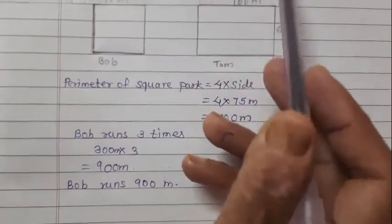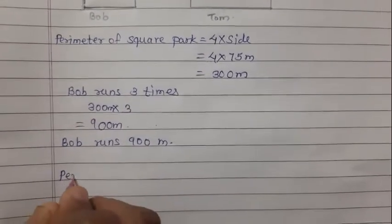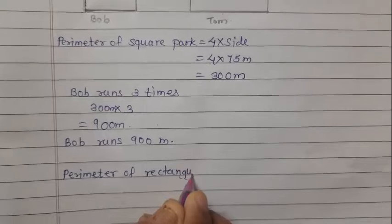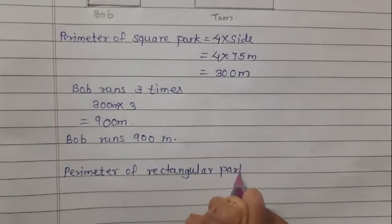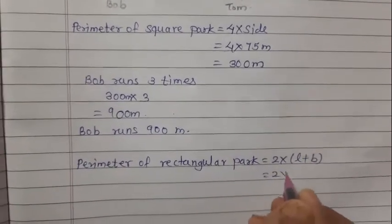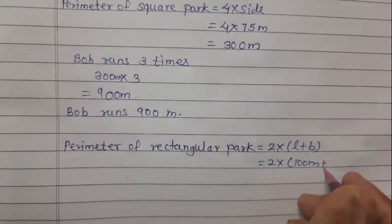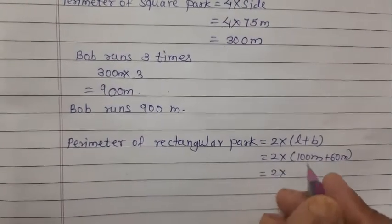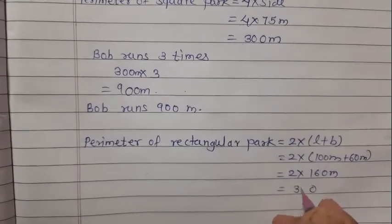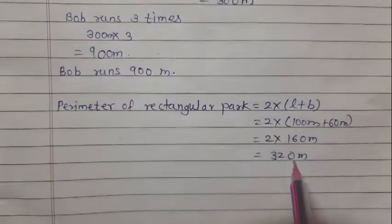Now Tom runs twice around the rectangular park. Let's find the perimeter of the rectangular park. Formula: 2 into bracket length plus breadth. Length is 100 meters and breadth is 60 meters. So 2 into 100 plus 60 is 160 meters, then 160 into 2 is 320 meters. The perimeter of the rectangular park is 320 meters.